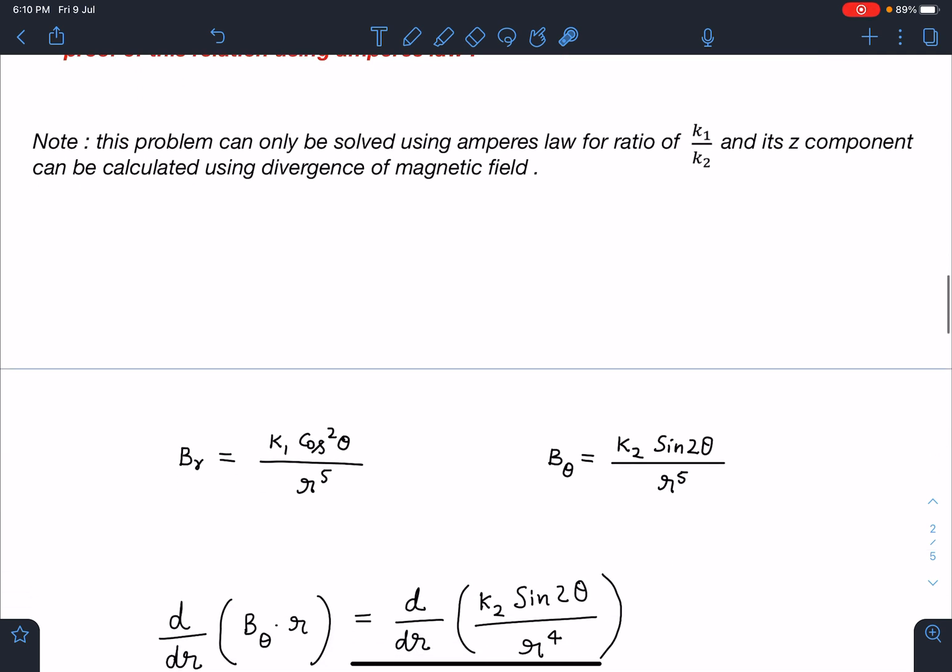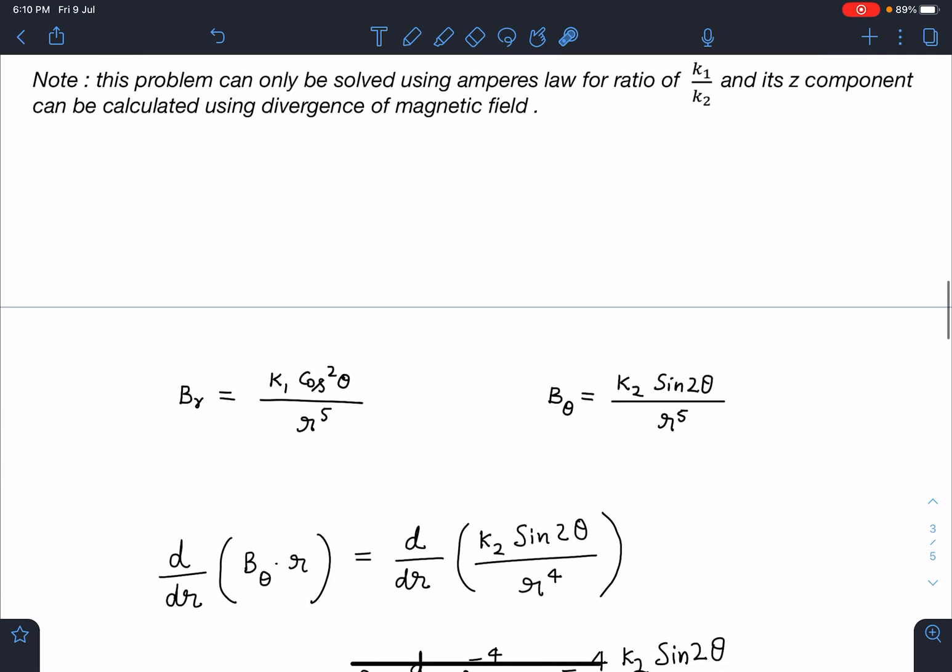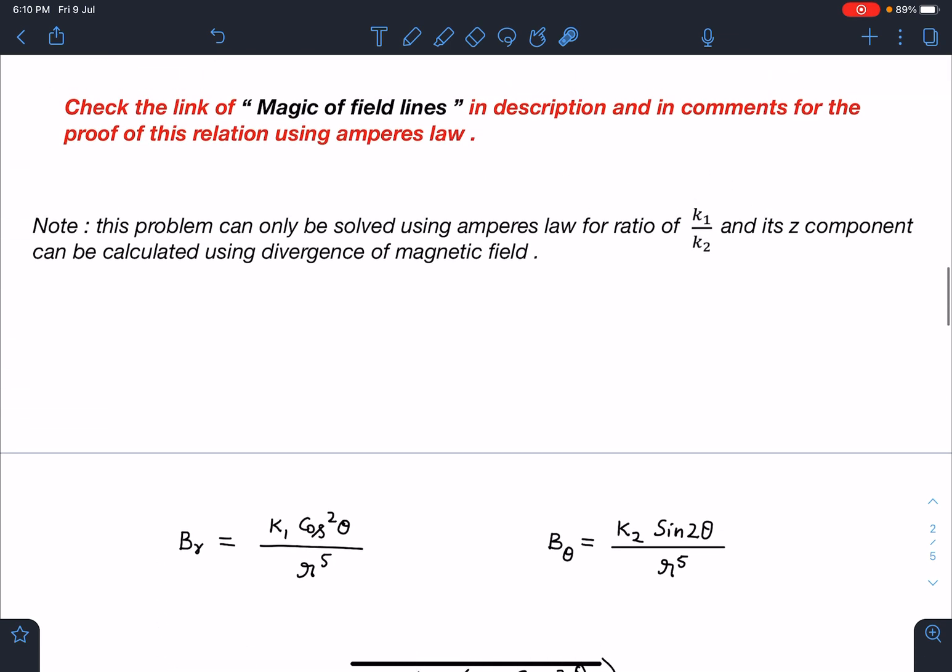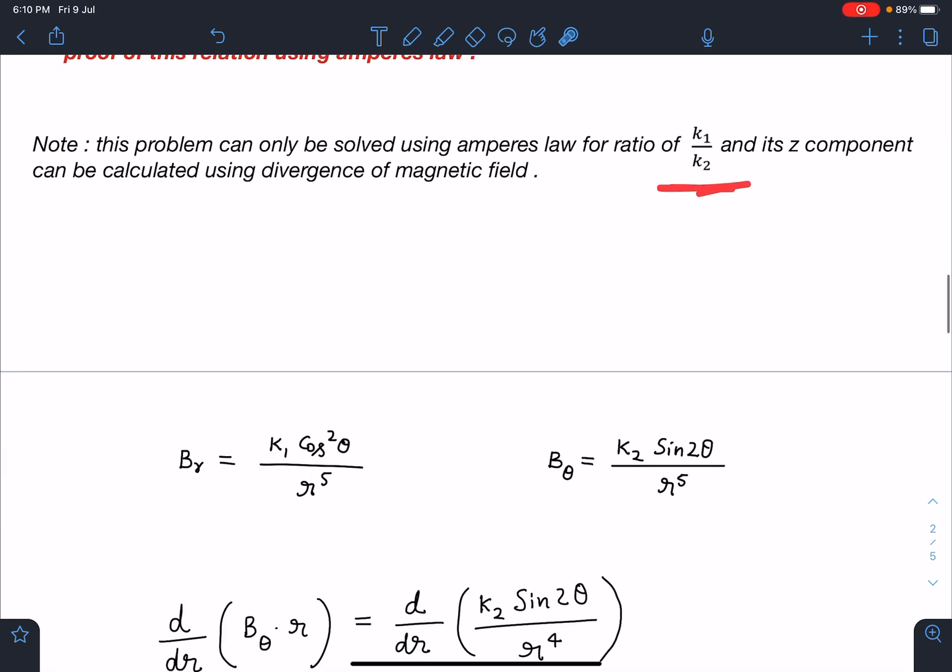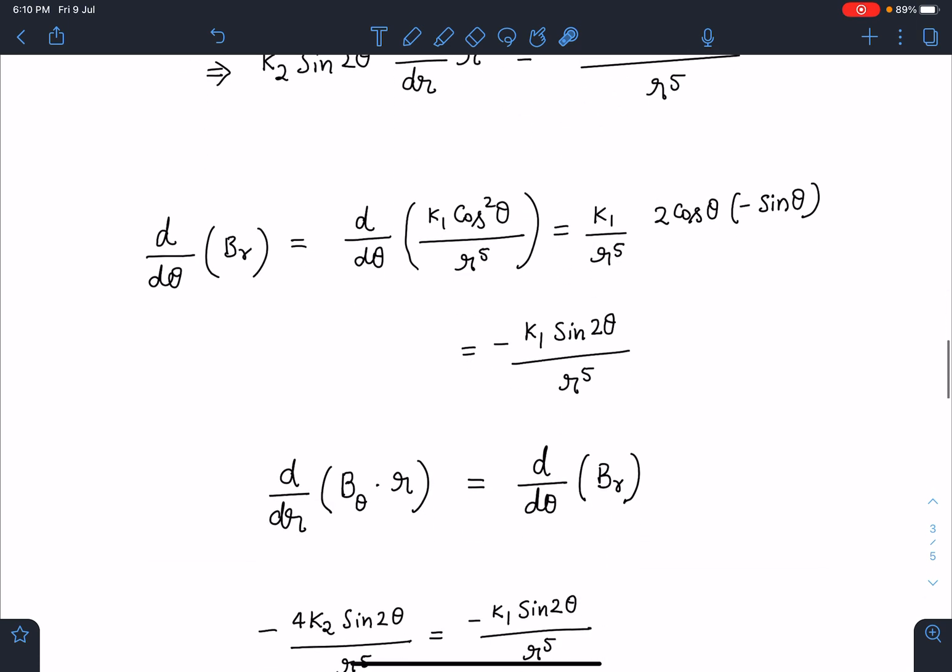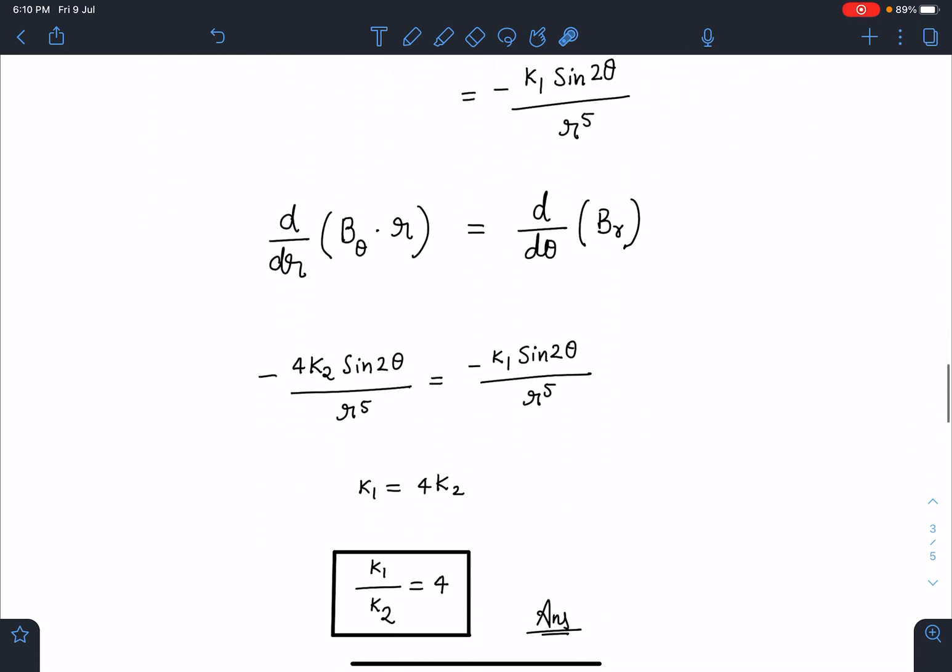So overall magnetic field we can write this is going to be B_r r cap, B_theta theta cap, plus B_z k cap. That will be the complete logic of this concept here. And this k1 by k2 ratio, this method is quite superior in order to find this k1 by k2 ratio. And here now we cannot apply the divergence logic.